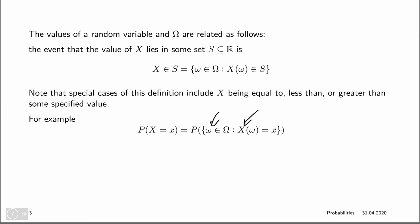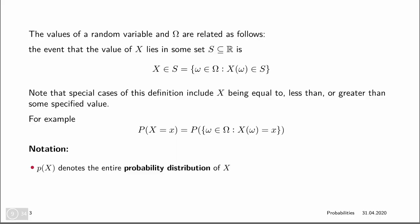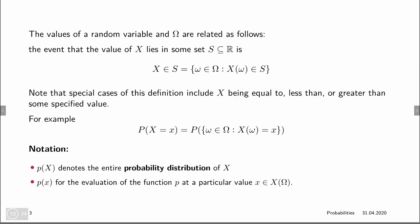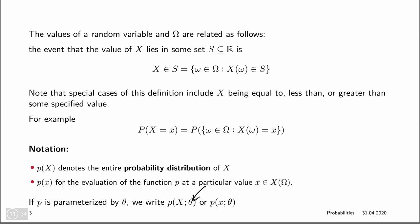So random variables are uppercase letters and values are scalars, so they are lowercase. Whenever we are talking about p of uppercase X, we would mean the entire probability distribution of that random variable X. And if we say p of little x, we would mean the probability of X taking a particular value. Probabilities can also have parameters associated to them — we would separate those from the input of p with a semicolon.